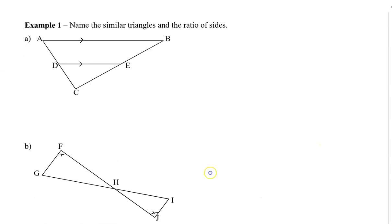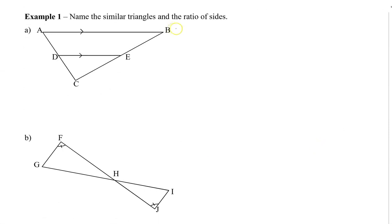In this first example, I'm going to name the similar triangles and the ratio of the sides. I'm going to go through step by step to show you why the angles are equal, so that the triangles are similar. Now we can see that we have two arrows here, and these two arrows indicate that AB is parallel to DE. And this is important to know, because now we know some of the angles are equal.